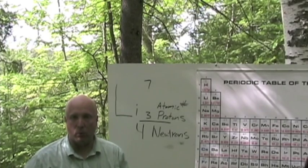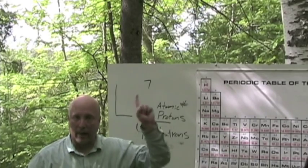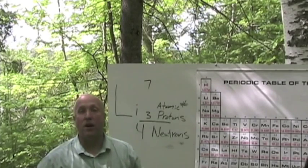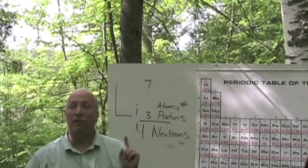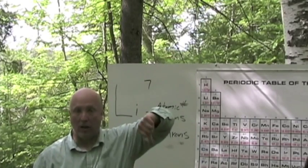The way that periodic table works is if it's just one letter, there's always going to be a capital, an uppercase. And then if there's two letters, the first letter is going to be a capital, and the next letter is going to be a small case.